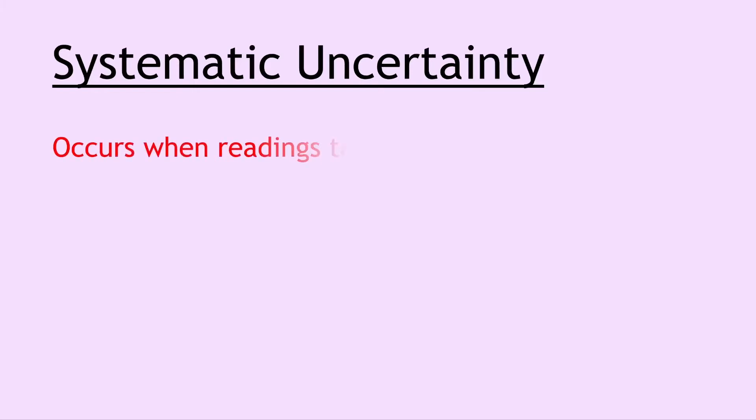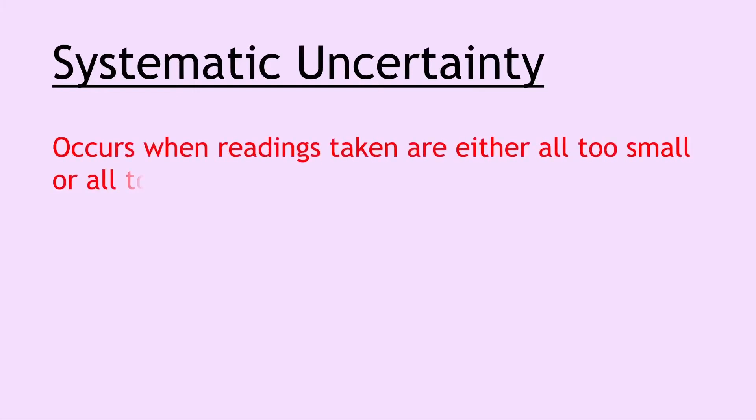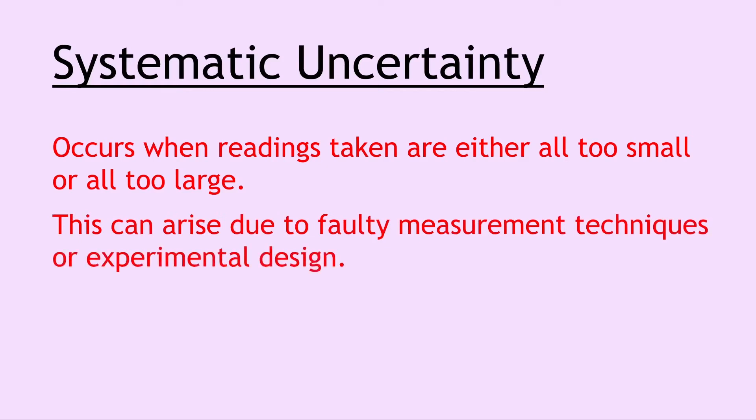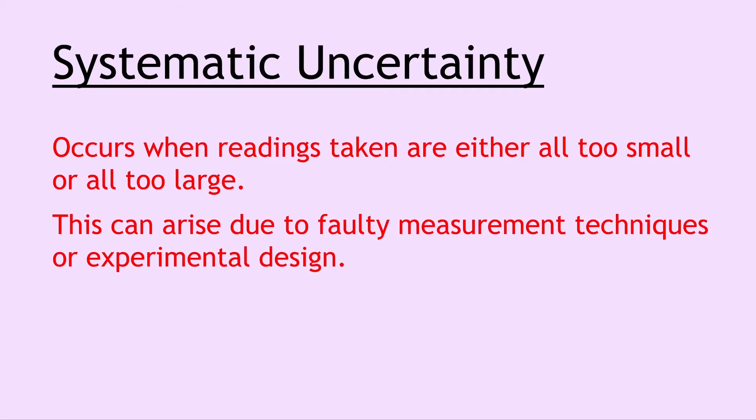Moving on, we have systematic uncertainty, and this occurs when readings taken are either all too small or all too large. This can arise due to faulty measurement techniques or experimental design. You can show systematic uncertainty on a graph, where instead of a line going straight through the origin, it will actually be offset from the origin, showing that all the measurements taken are offset in some way.